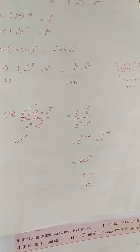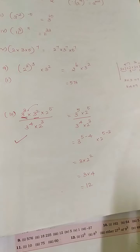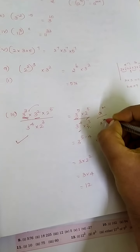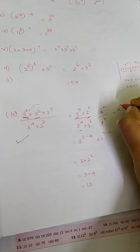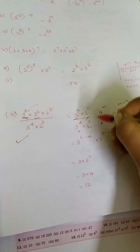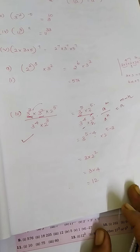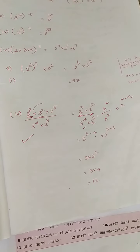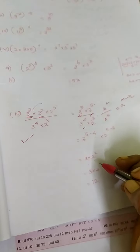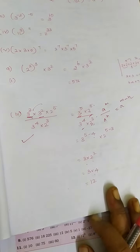Next step: check the numerator — no common terms to simplify there. In the denominator, check for the same base. You have base 3 and base 2 appearing in both numerator and denominator, so apply the division formula a power m divided by a power n equals a power m minus n — subtract the powers. It becomes 3 power (5 minus 4) multiplied by 2 power (5 minus 3). That is 3 power 1 multiplied by 2 power 2, which is 3 times 4, giving the answer 12.